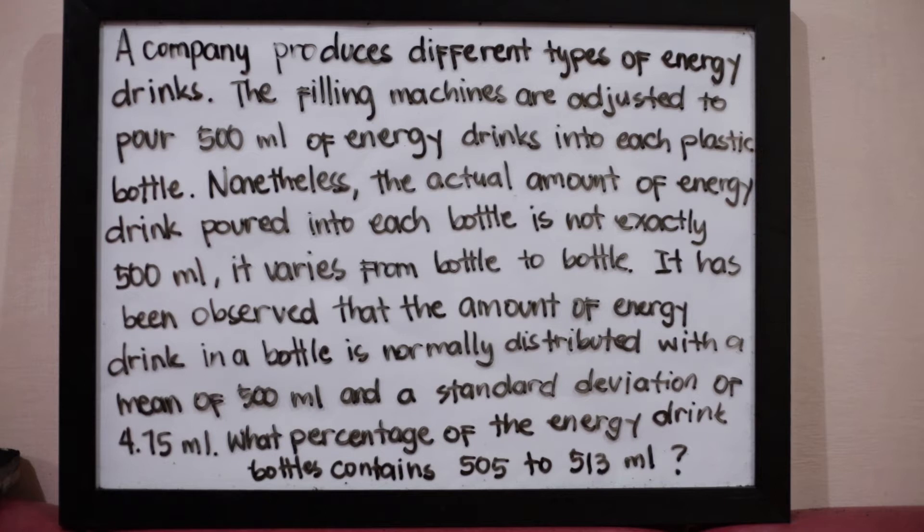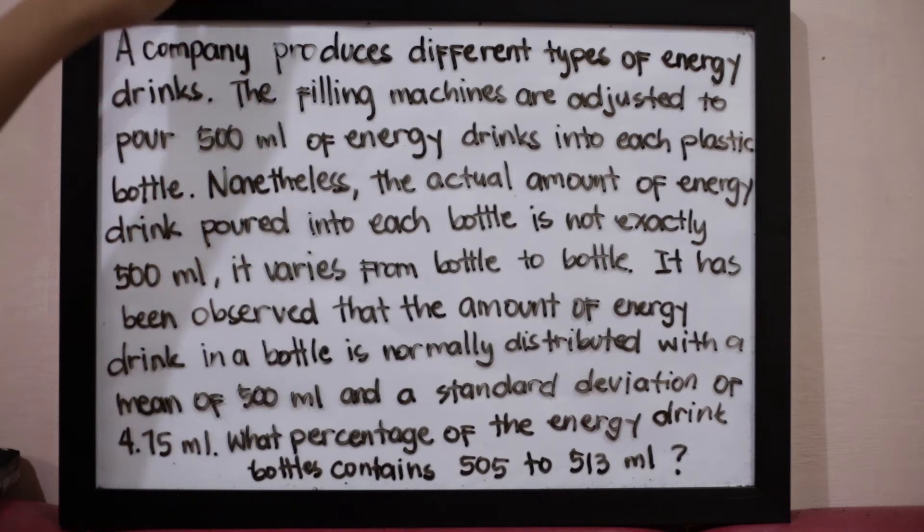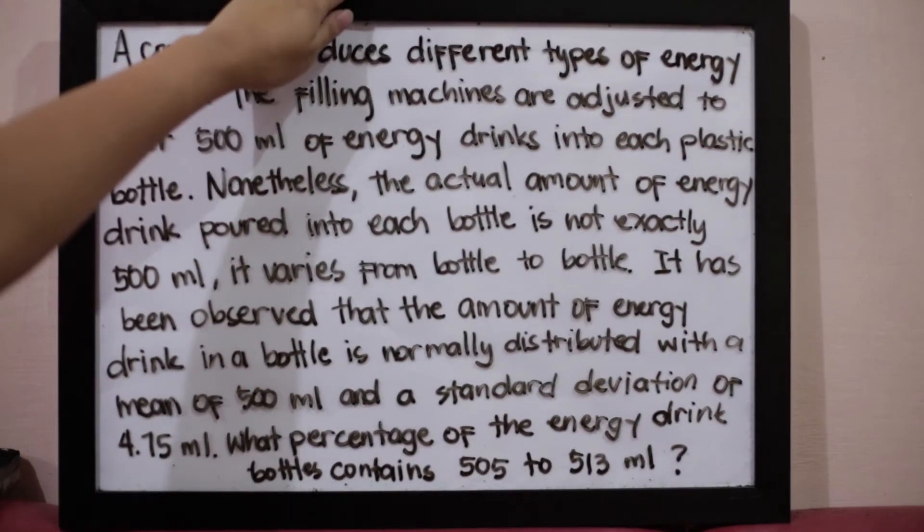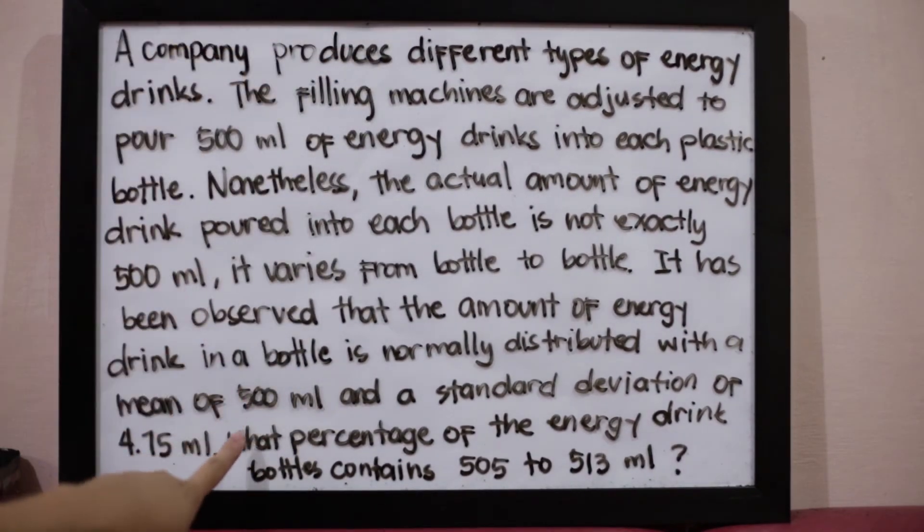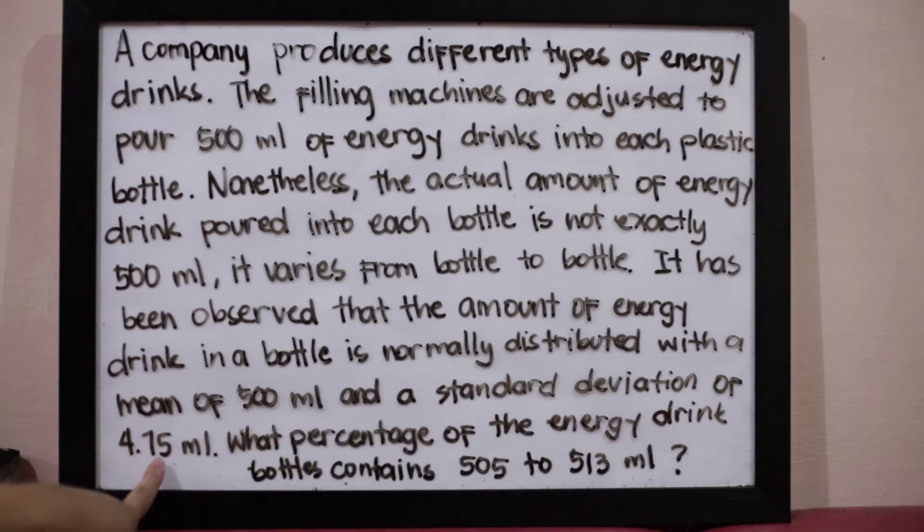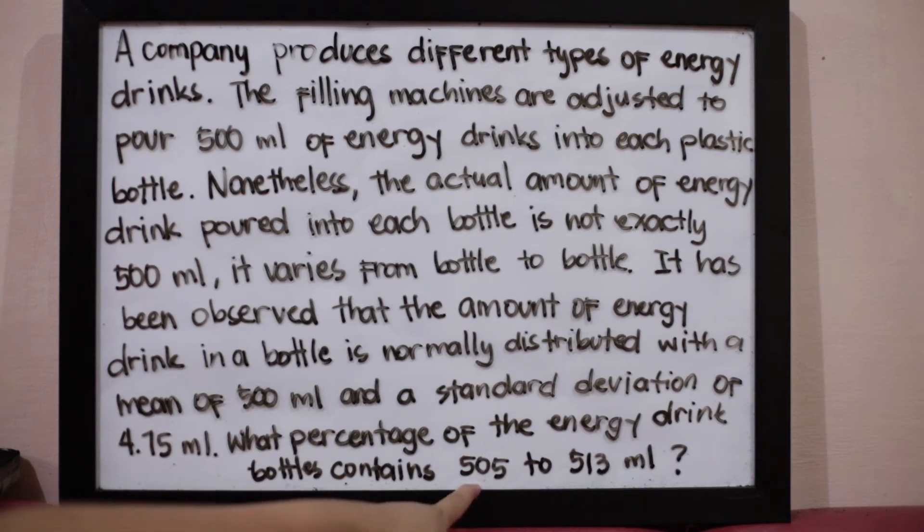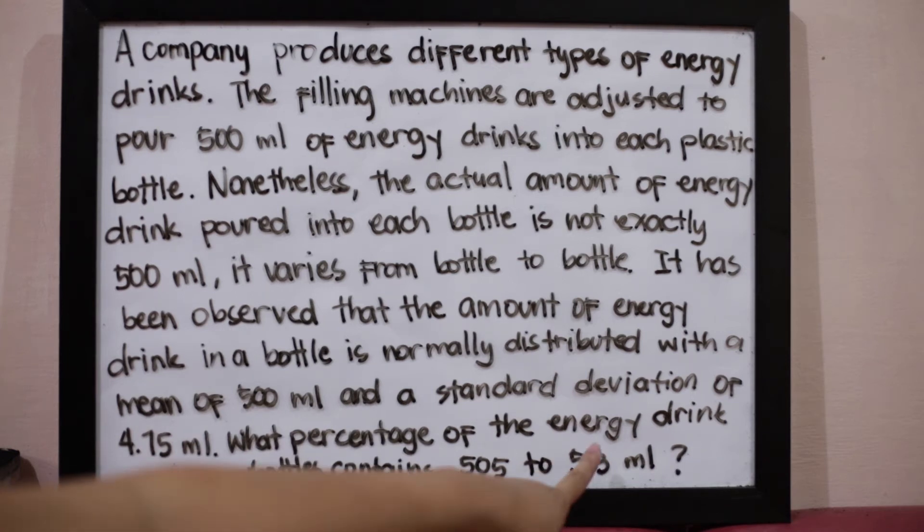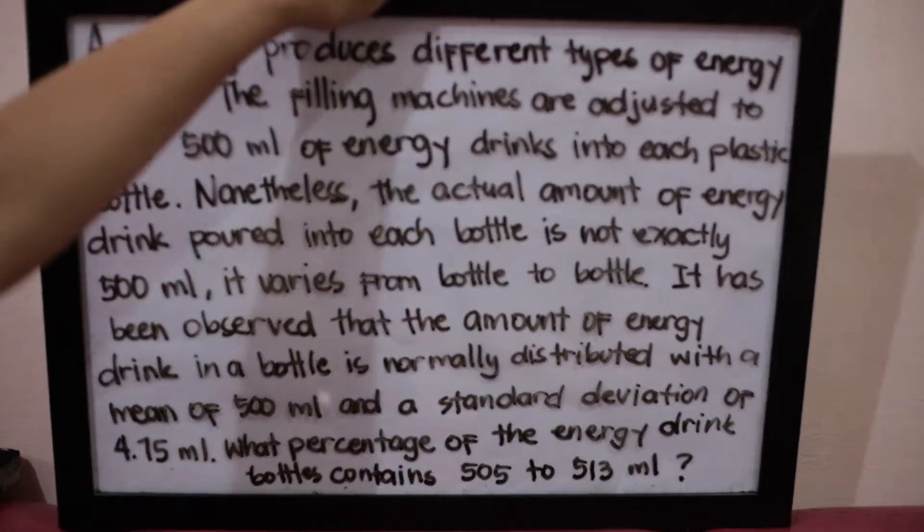Just like the two previous examples, our given values are in raw scores. So we have to rewrite those raw scores into z-scores. Our mean is 500 as stated, and the standard deviation is 4.75. We have to get the z-score equivalent to the raw scores 505 and 513.